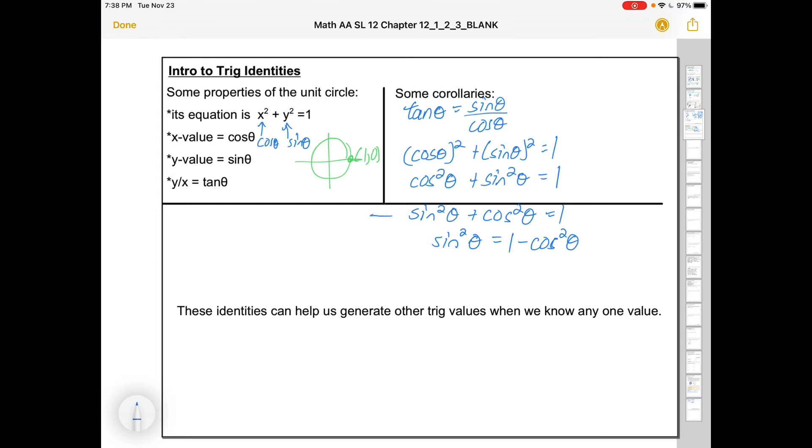Or if I took this one and I moved the sine squared to the other side, I'd get cos squared theta is one minus sine squared theta. These are little sort of puzzle pieces that we can use to rearrange and to figure out missing bits.